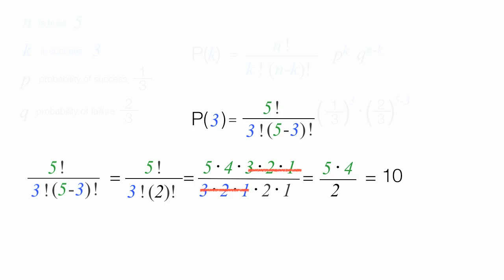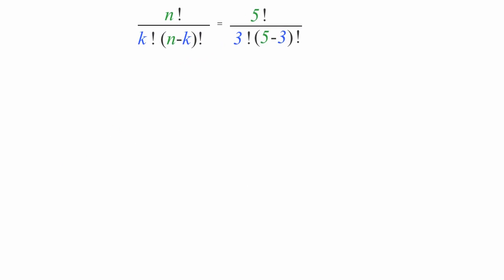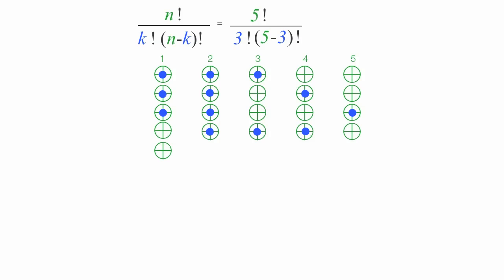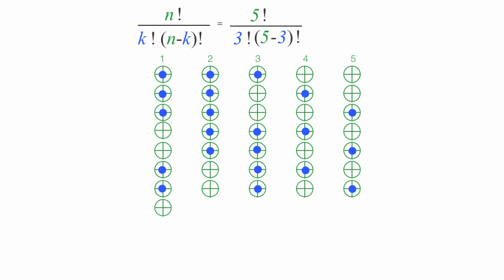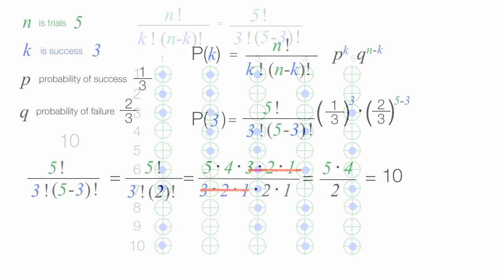This part of the calculation is known as combinations. What the ten represents is: if I have five targets and I hit three of them, how many different ways can I hit it three times? The answer is ten different ways. I'll put a link to a video below on combinations so you can explore that a little bit more if you want to.